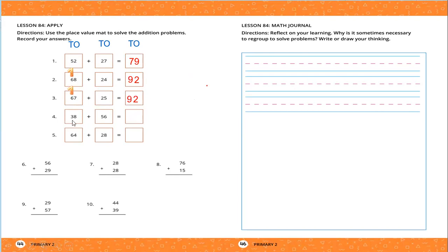Question number 4: 38 plus 56. I will add 8 plus 6 — 8 in my mind and 6 on my fingers. After 8: 9, 10, 11, 12, 13, 14. I will write only 4 and carry up 1. 1 plus 3 equals 4, then 4 plus 5 — big number 5 in my mind and 4 on my fingers. After 5: 6, 7, 8, 9. So the result equals 94.